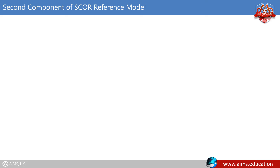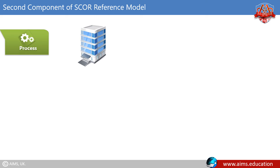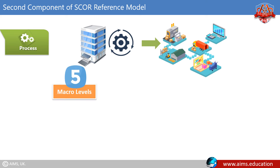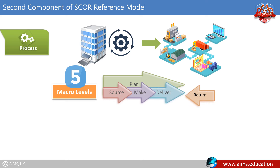The second component of the SCOR reference model is Process. This section provides a set of predefined descriptions for activities that companies perform to effectively execute their supply chains. The five macro-level SCOR processes — Plan, Source, Make, Deliver, and Return — are well known, and SCOR identifies two more levels of process detail.